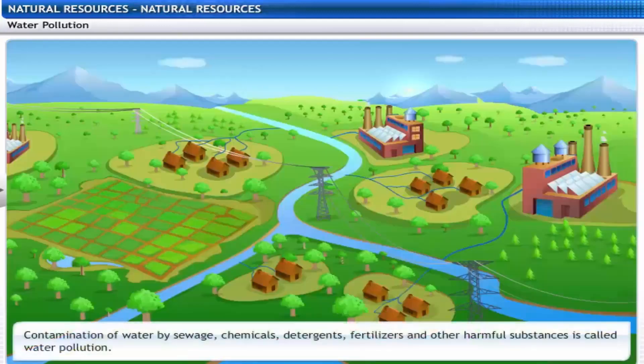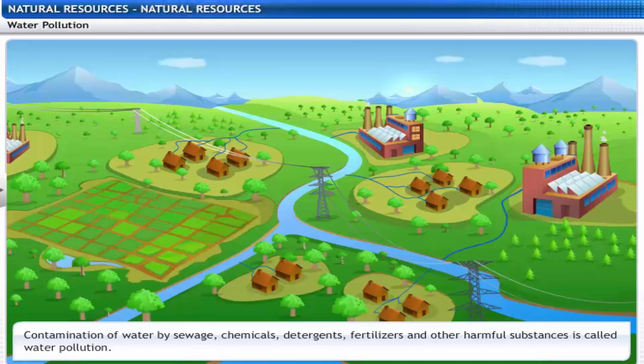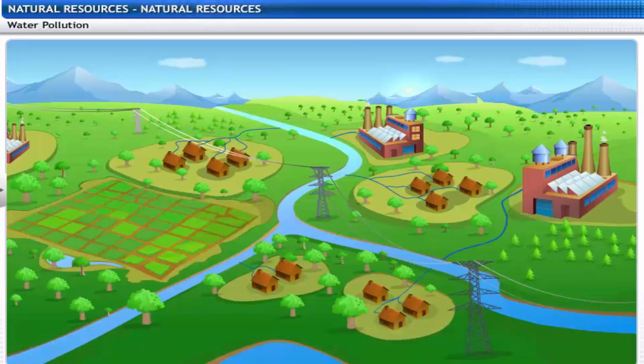The contamination of water by sewage, chemicals, detergents, fertilizers and other harmful substances is called water pollution. Let's take a look at the causes of water pollution.